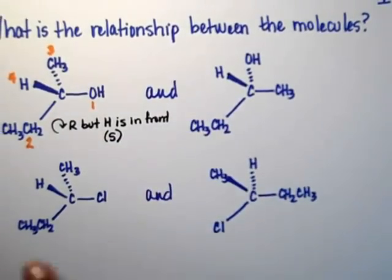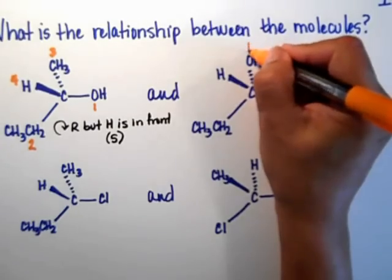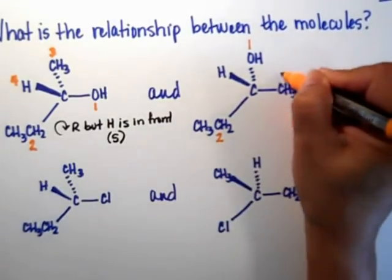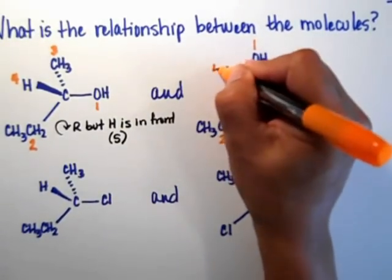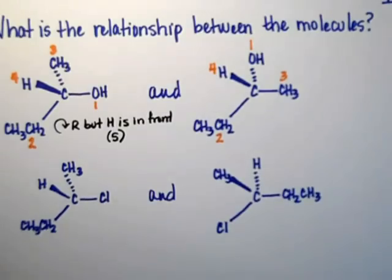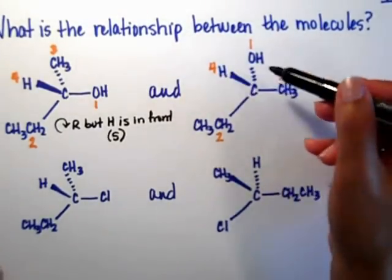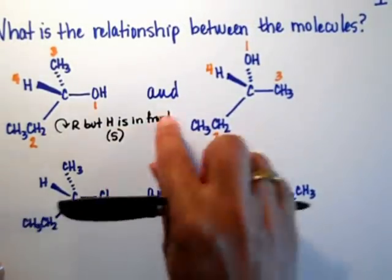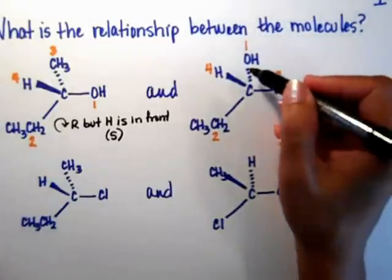This molecule that I have on the left is the S chiral center. Let's see what this one is. We have the exact same groups, of course, so all I have to do is just transfer the numbers. Notice that I still have hydrogen in the front, so I'm going to have to use the trick for the final answer.